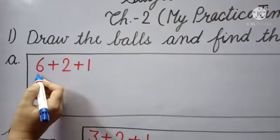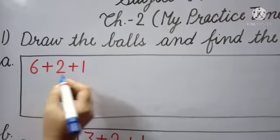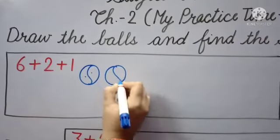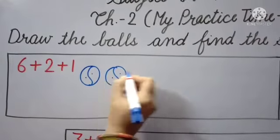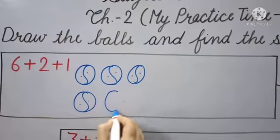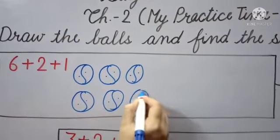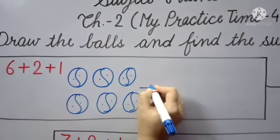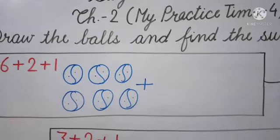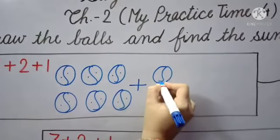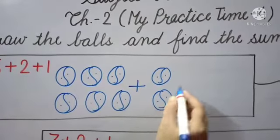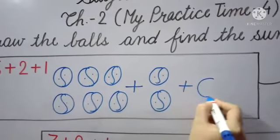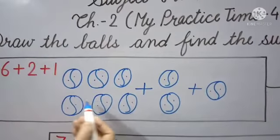Yes, dear kids. The first number given here is 6, so we will draw 6 balls like this: 1, 2, 3, 4, 5, and 6. Next number is 2, so we will draw 2 balls like this: 1 ball, 2 balls. Next number is 1, so we will draw 1 ball like this. 1 ball.